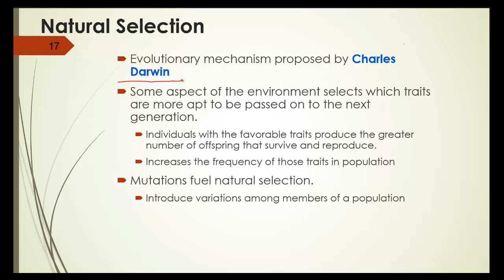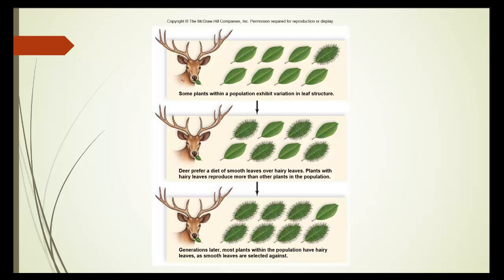Mutations fuel the natural selection process. They introduce variations among members of a population. For instance, some plants with the population exhibit variation in the leaf structure. As the deer eats the leaves, they tend to avoid the ones with the hairy leaves.